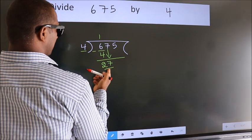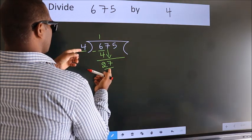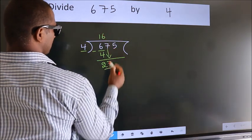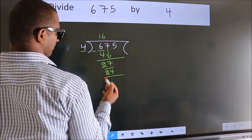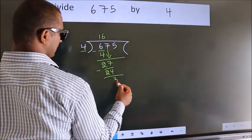A number close to 27 in the 4 times table is 4 times 6, which equals 24. Now we subtract and get 3.